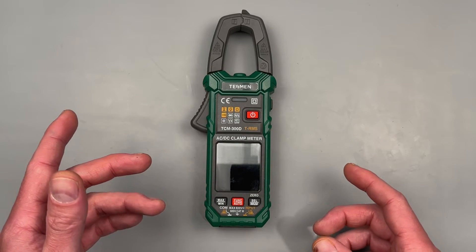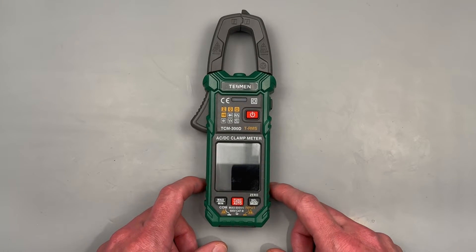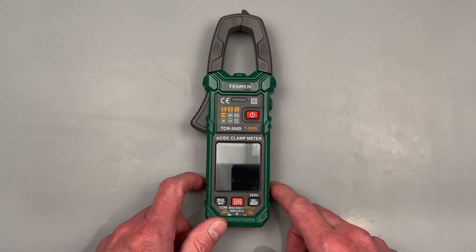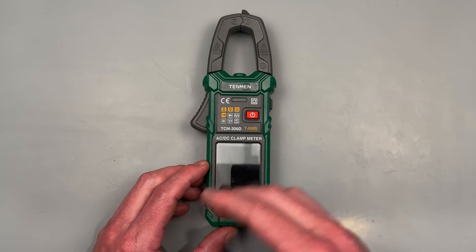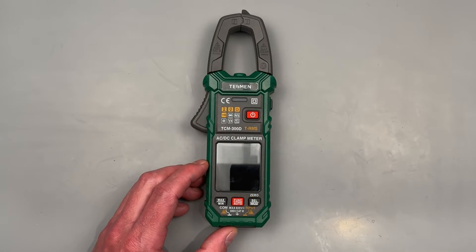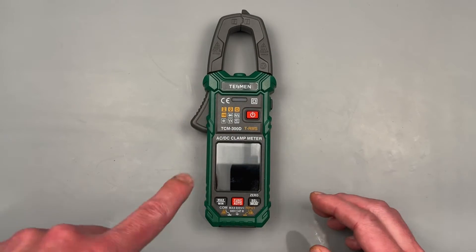All right folks, welcome back to another adventure in the garage. Today we got a great little meter for you by Tesman, it is their TCM-300D. We're going to be going over a how-to video of this, so we'll start out going through all the functions and just telling you the names of those functions, and then we'll circle back to the beginning and run through a practical demonstration.